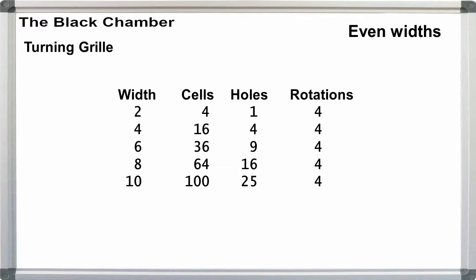For even numbered grills, for a width of 2, we have 4 cells, 1 hole, and 4 rotations. For a width of 4, we have 16 cells, 4 holes, and 4 rotations.